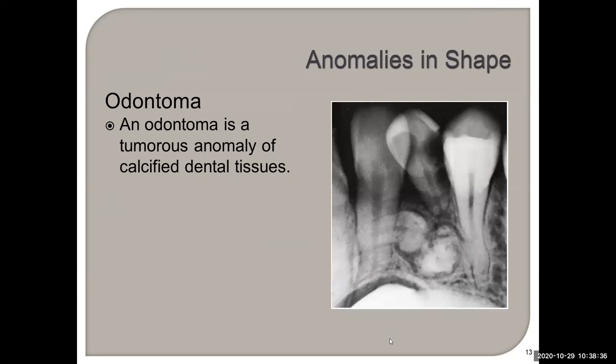An odontoma is a tumor — a growth anomaly of calcified dental tissues that looks like a tooth.